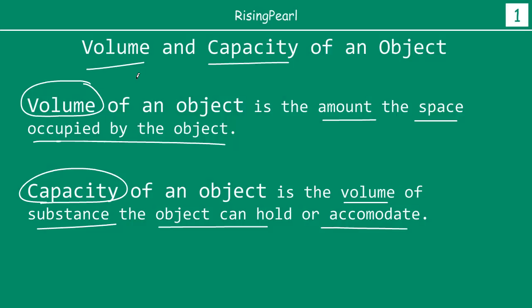Meaning, if the object — whatever object is in question — if this object is hollow or empty from inside, then we can potentially fill that in with any kind of gas or liquid. In that case, capacity of the object will be equal to the volume of the substance that the object can hold or accommodate. So this is important to keep in mind.